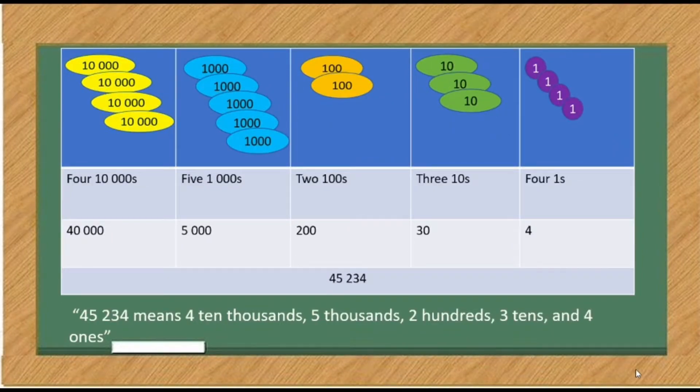I will give you another example. There are 4 ten thousand disks, 5 one thousand disks, 2 one hundred disks, 3 ten disks, and 4 one disks. So, 40,000 plus 5,000 plus 200 plus 30 plus 4 is equal to 45,234. 45,234 means 4 ten thousands, 5 thousands, 2 hundreds, 3 tens, and 4 ones.